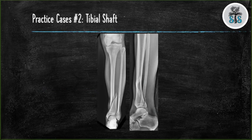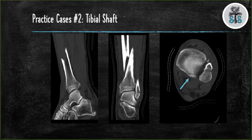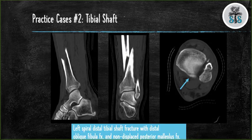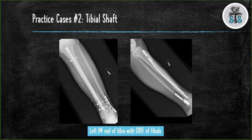We will finish with one more case. We have AP and lateral views of the left tibia and fibula in a skeletally mature individual demonstrating a distal third tibial shaft fracture with a distal oblique fibula fracture. A CT demonstrated a posterior malleolus fracture best seen on the sagittal and axial cuts. The tibial shaft was treated with an intramedullary nail and the fibula was treated with a lag screw and neutralization plate.